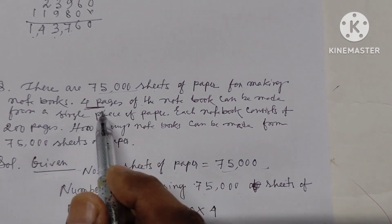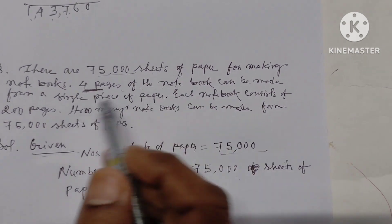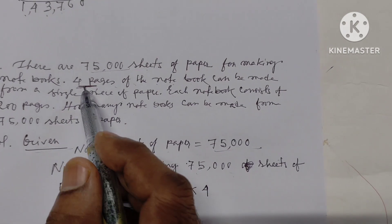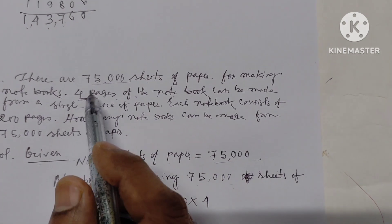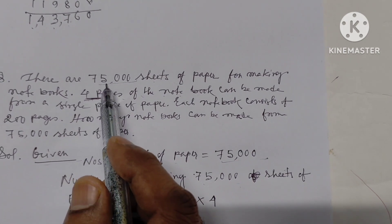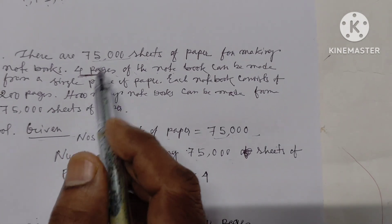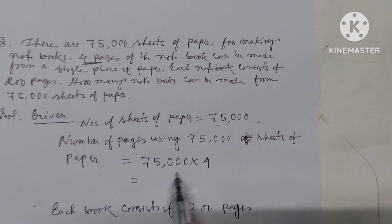Since 4 pages of the notebook can be made from a single sheet, using 75,000 sheets gives us 75,000 multiplied by 4 total pages.